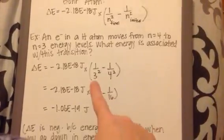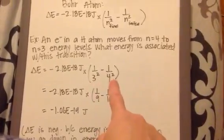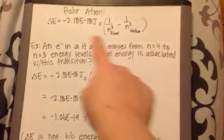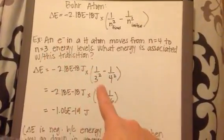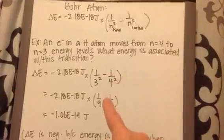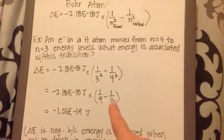So we're plugging in final minus initial. It started at 4, it ends at 3, so that's why it's 3 squared minus 4 squared. So 1 ninth minus 1 sixteenth.